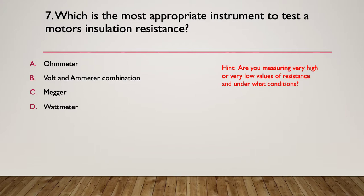Hint: are you measuring very high or very low values of resistance and under what particular conditions? So you would need to use a megger because it's going to test the motor's insulation resistance, which is very very high values of resistance, but it also uses high voltages to do it, normally 500 maybe 1000 volts to see if it can cause the insulation resistance to break down. So not only measuring the resistance in mega ohms but we're also measuring its voltage strength. So a megger is the appropriate instrument because it does both together.